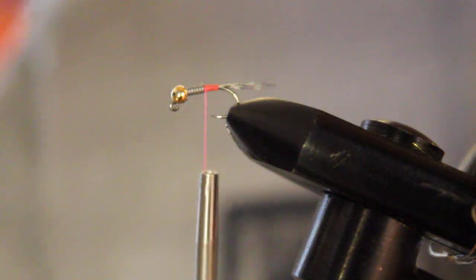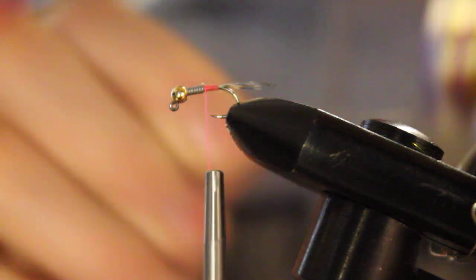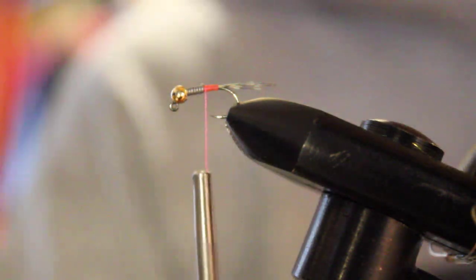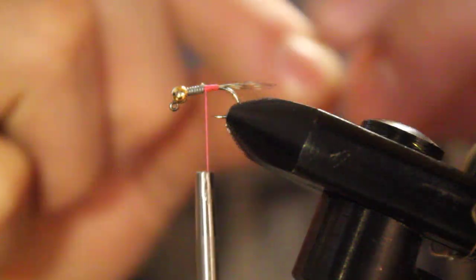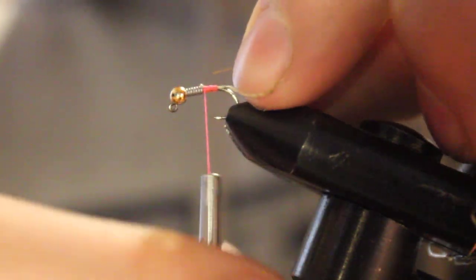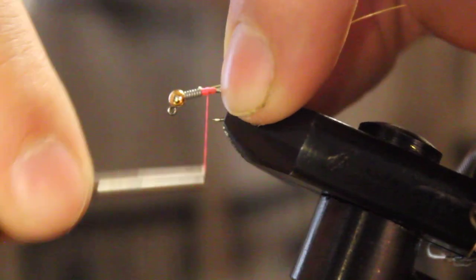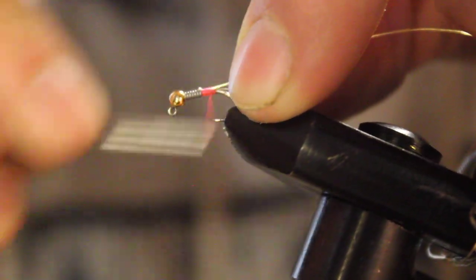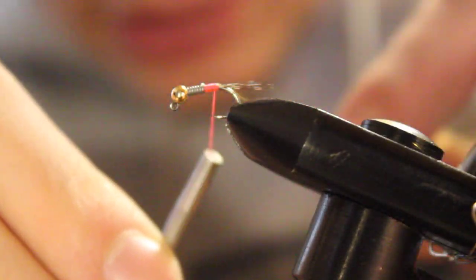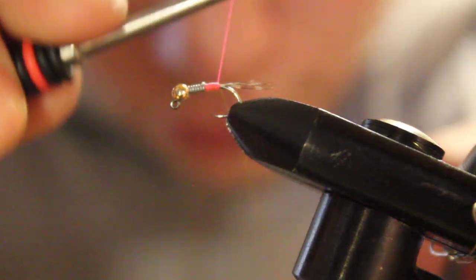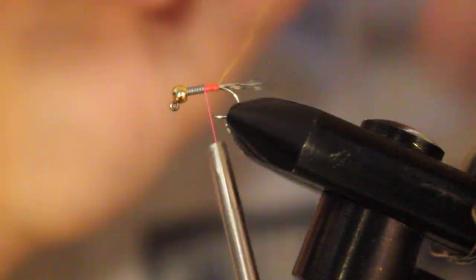Now we are going to take a piece of that gold small ultra wire. You can use other wire if you want. I like this gold ultra wire. We are going to tie it in. I don't want it going over the lead either, because we still got to tie the pheasant tail in. We are going to wrap that back and stop it just before where we tied the tail in.